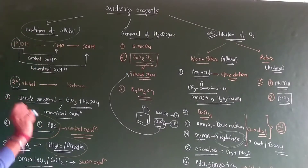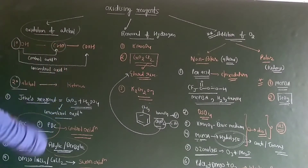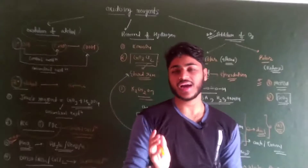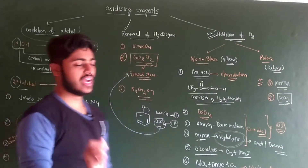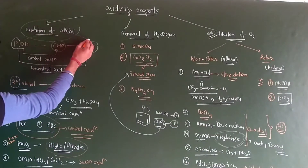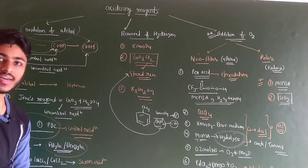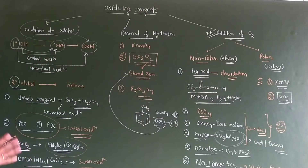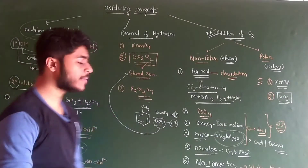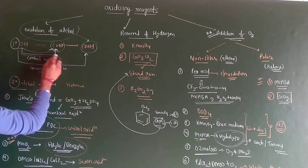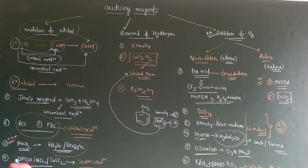Primary alcohol can be converted to aldehyde and carboxylic acid, depending on the oxidizing reagent. If the oxidizing reagent is very strong, it will give you primary alcohol directly converted to carboxylic acid. If the oxidizing reagent is weak, it will convert primary alcohol to aldehyde. If my primary alcohol converts to aldehyde, we call that controlled oxidation. If it converts to carboxylic acid, we call it uncontrolled oxidation.